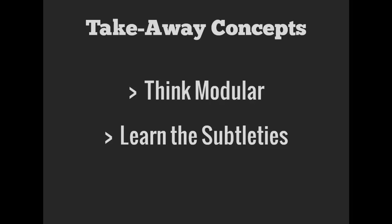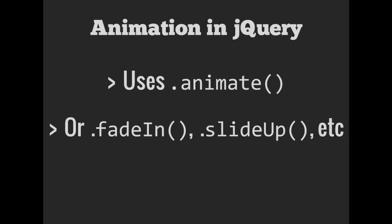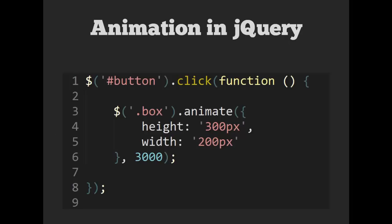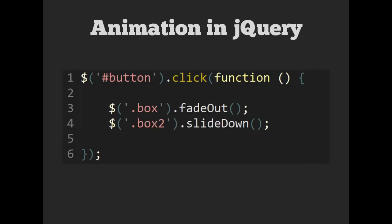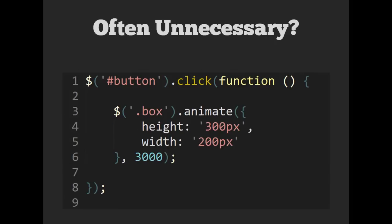Let's look at that first concept: thinking modular. In this presentation I'm focusing a lot on animation and transitions. Customarily in jQuery, we've done animations using either the animate method or built-in methods like fadeIn and slideUp. Here's how an animation might look with the animate method — we're changing CSS on the fly, running the animate method in response to an event, specifying which CSS properties to change and a duration of three seconds.